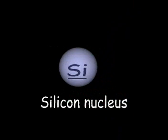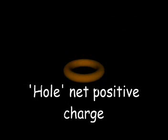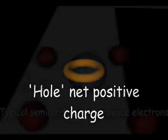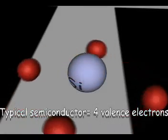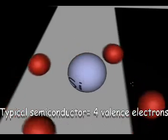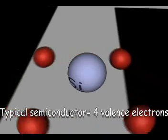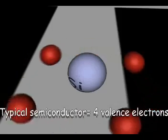First of all, it should be noted that in a pure semiconductor, there are equal numbers of electrons, which are negatively charged particles, and holes, which possess a net positive charge. The most basic semiconductors are silicon or germanium, both of which are tetravalent, that is, they have four valence electrons on the outermost shell.